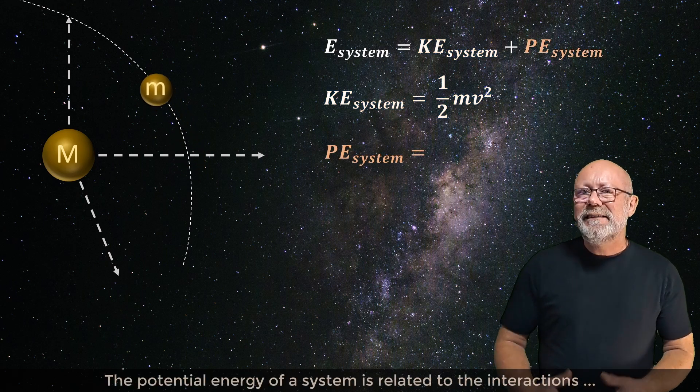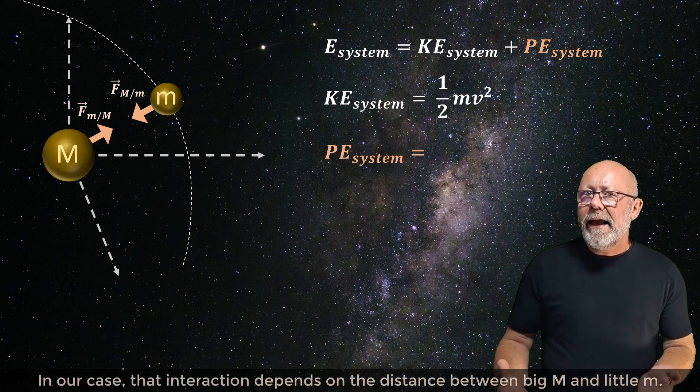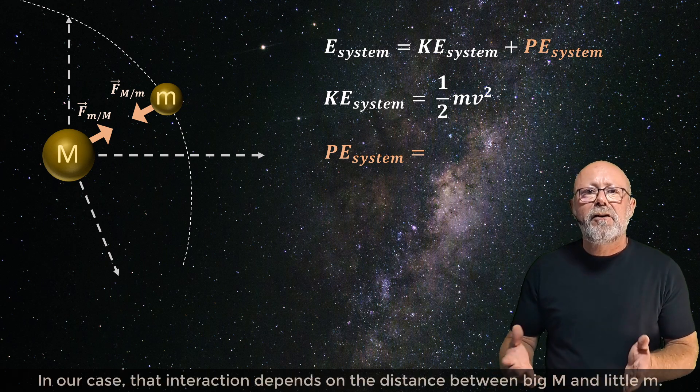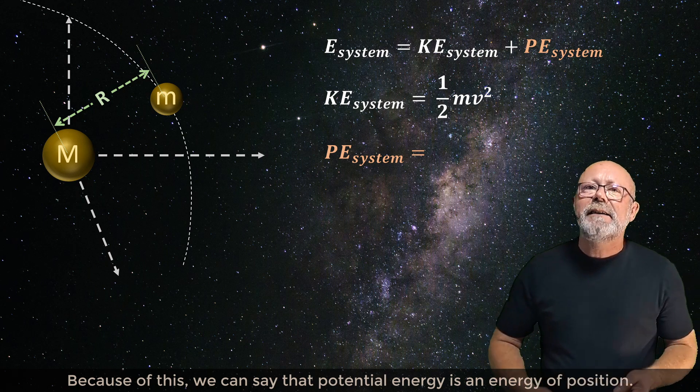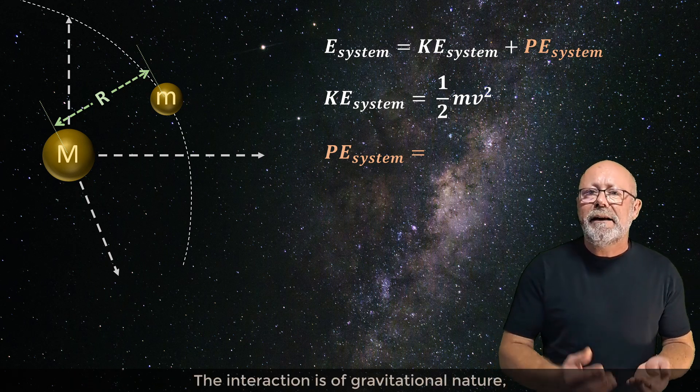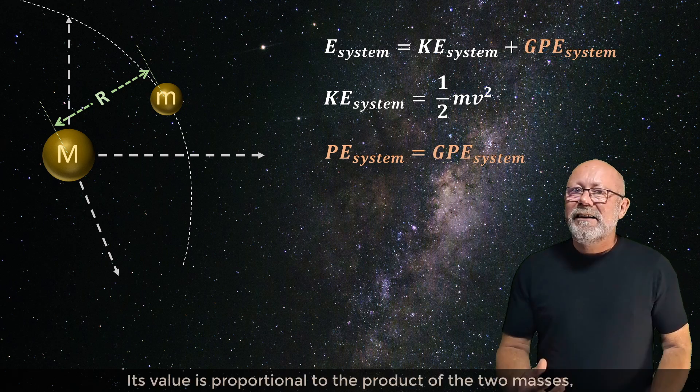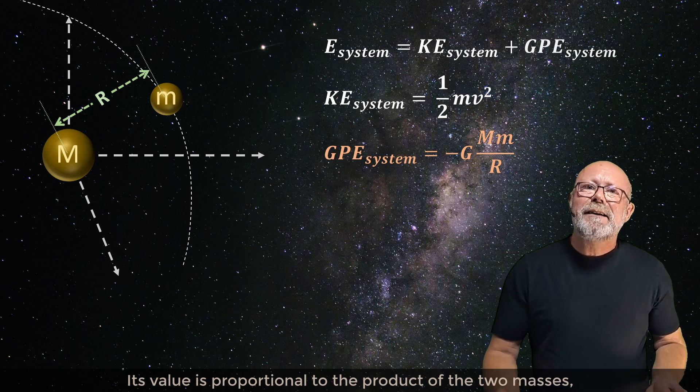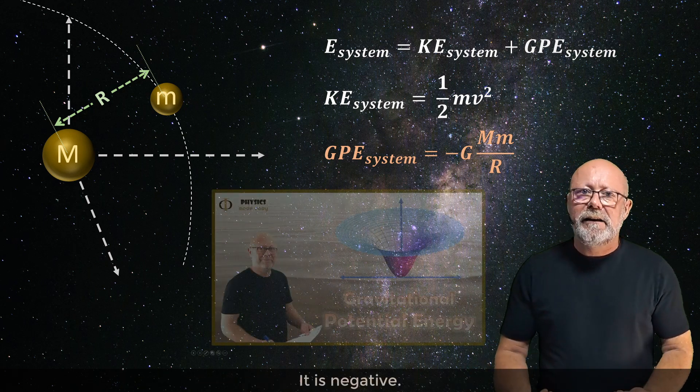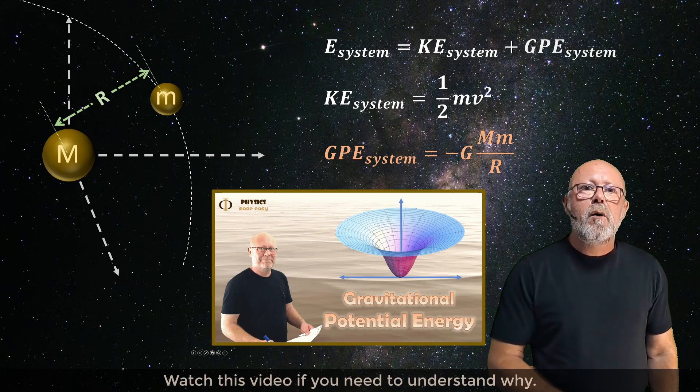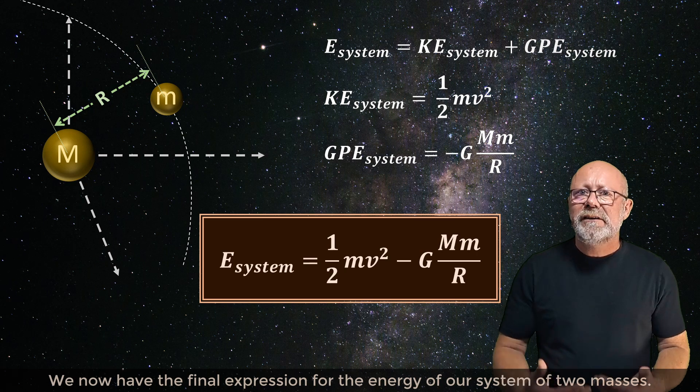The potential energy of a system is related to the interactions between the components of that system. In our case, that interaction depends on the distance between big M and little m. Because of this, we can say that potential energy is an energy of position. The interaction is of gravitational nature, so here we are dealing with gravitational potential energy. Its value is proportional to the product of the two masses, and inversely proportional to the distance between them. It is negative. Watch this video if you need to understand why. We now have the final expression for the energy of our system of two masses.